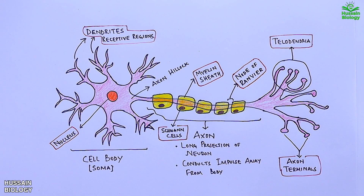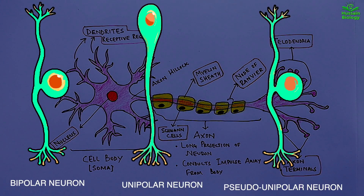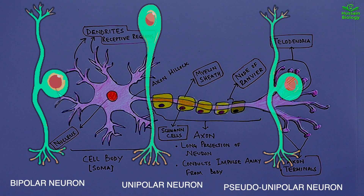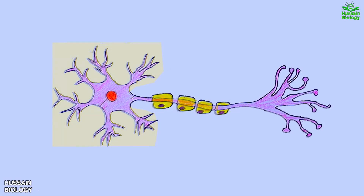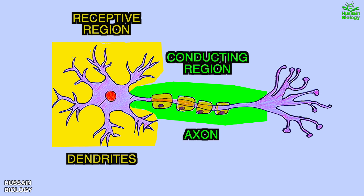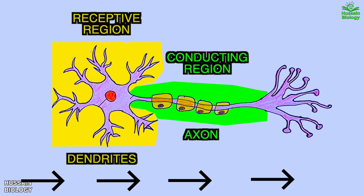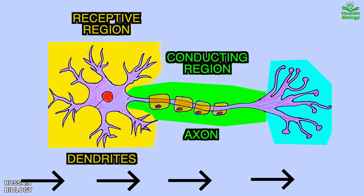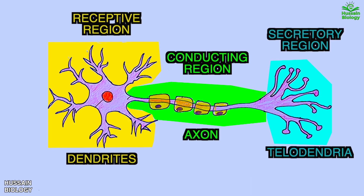This structure of the neuron is the general structure termed the multipolar neuron. We also have different types of neurons such as bipolar and unipolar neurons, which are not discussed here. In this structure, the cell body with dendrites is the receptive region — it receives the stimulus. The middle part, which consists of the axon hillock and axon, is the conducting region that generates and transmits action potentials. The last part, the terminal part of the nerve cell, consists of telodendria and is the secretory region where axon terminals release neurotransmitters.